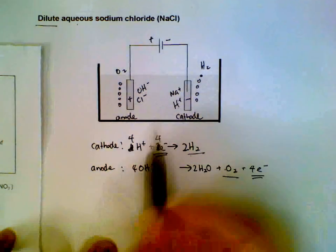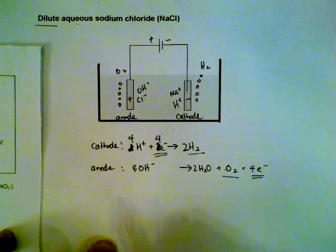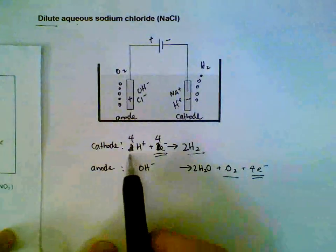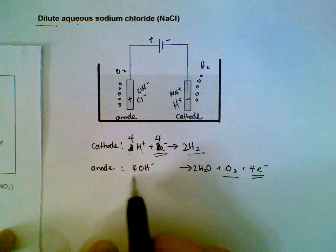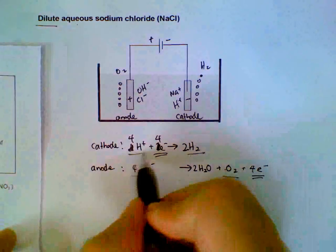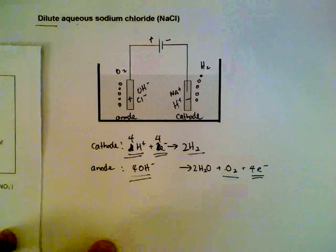What can we say about the pH of the electrolyte? Well, when we are removing 4H+, we will remove 4OH- at the same time. In other words, the pH remains the same.